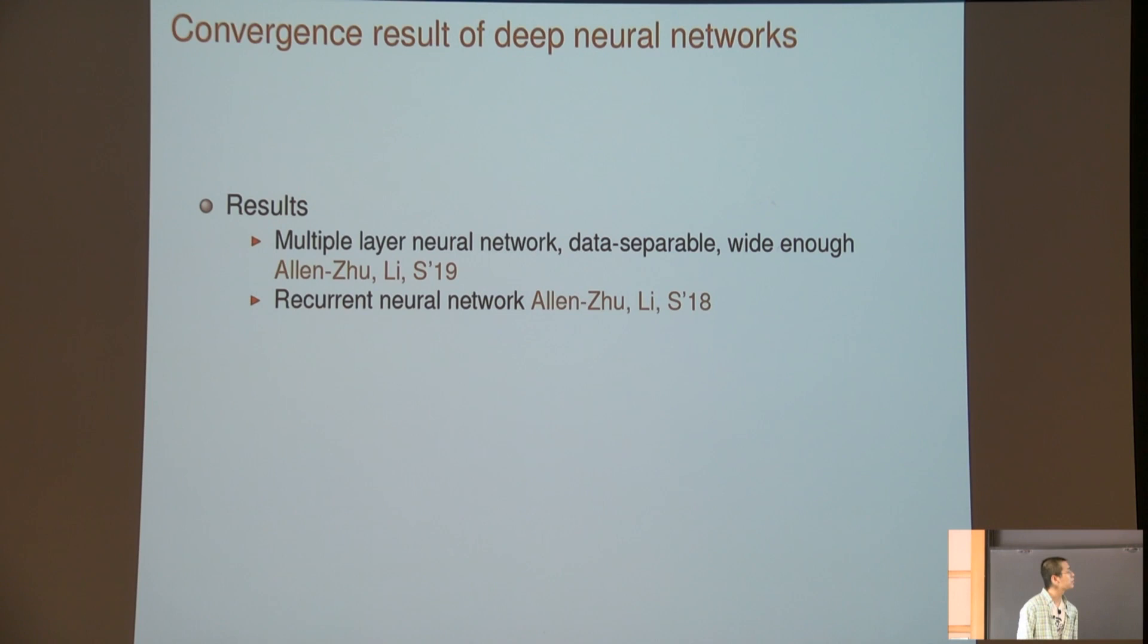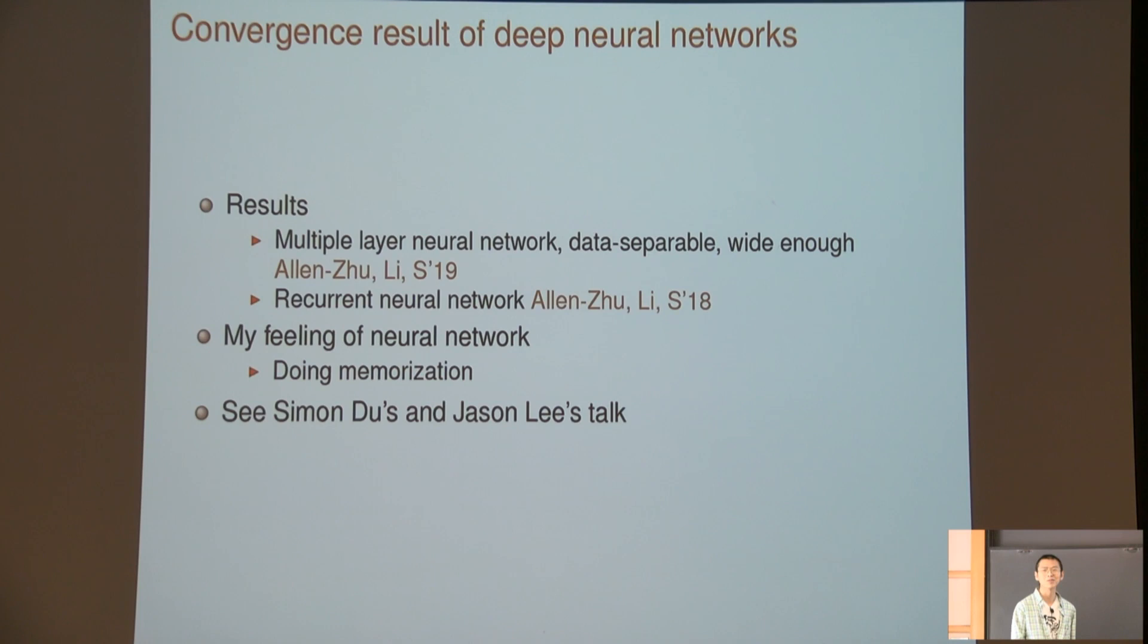Next, I'll talk about neural networks. This is joint work with Tsui and Yuan Zhu. We can prove that if you make reasonable assumptions on neural networks—like if you assume data are separable and neural networks are wide enough—if you run SGD or gradient descent, you can actually find a global minimum. Basically, my feeling of neural networks is just doing some memorization and not doing anything else, but this is just my personal feeling. Many people don't agree. I'm not a very good expert on this type of work. If you want to work on this topic, I would suggest you talk to Simon Du and Jason. They have talks online and are more expert than me on this.